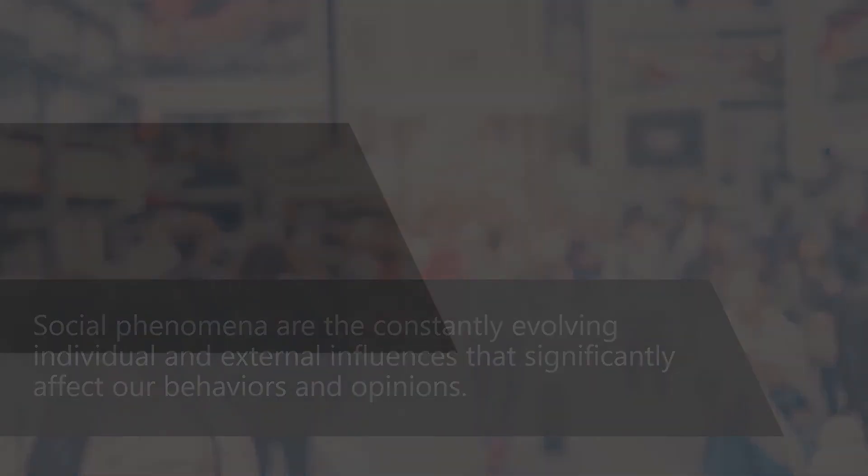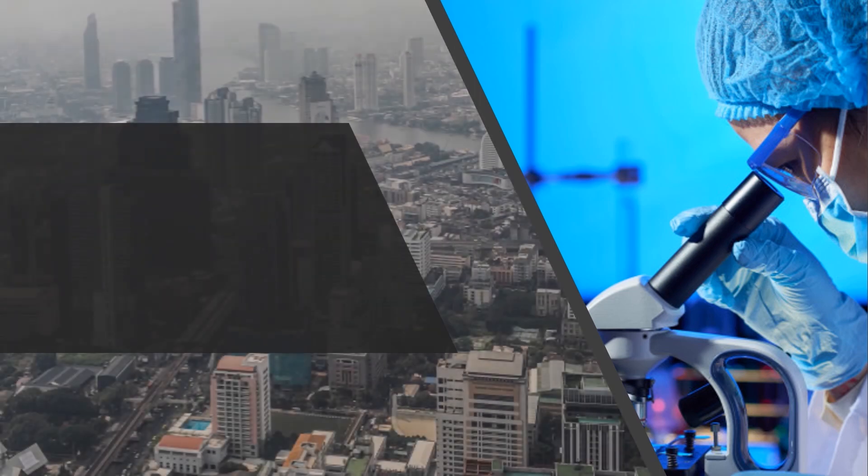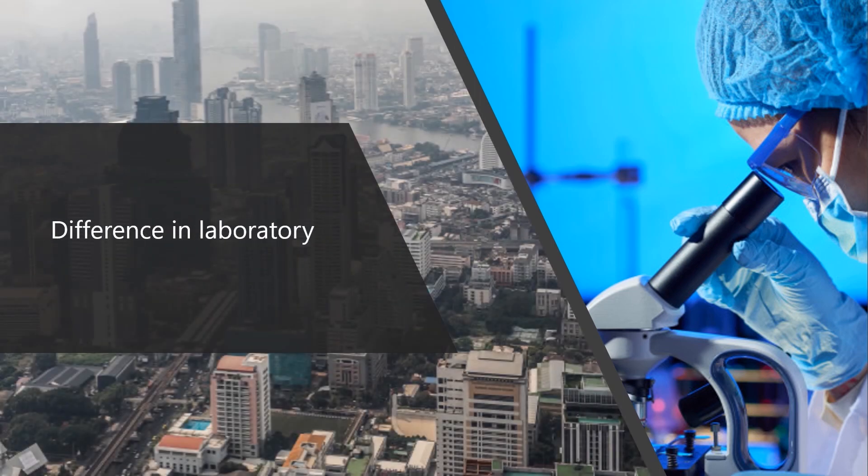A physical scientist is confined to the four walls of a laboratory and can conduct controlled experimentation. On the other hand, the laboratory of social scientists is as vast as the entire society and is not amenable for controlled experimentation.